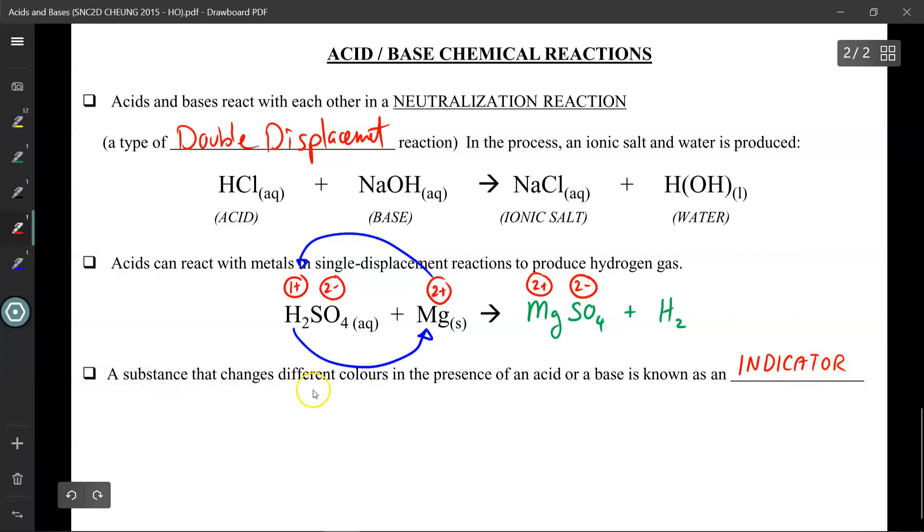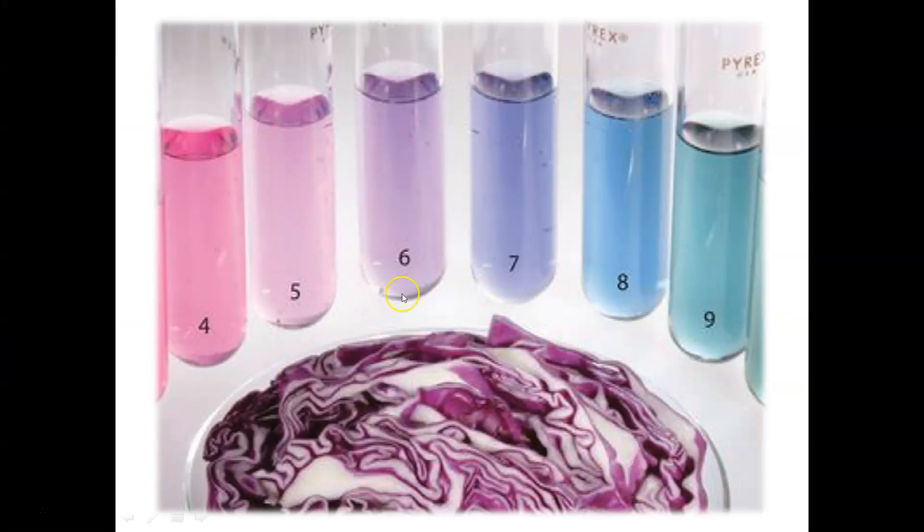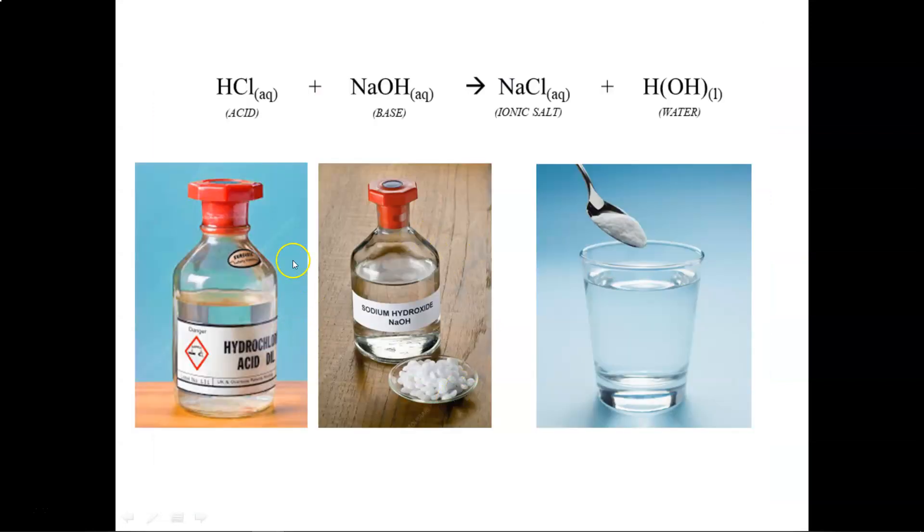Instead we can use something called an indicator. This is a chemical substance that changes different colors in the presence of an acid or a base. There are many different types of indicators, but a cool one you can make at home is found in red cabbage. There is a chemical inside red cabbages called anthocyanin that changes color depending on how many hydrogen or hydroxide ions are floating around your solution. The anthocyanin turns more bluish greenish if exposed to hydroxide ions, but becomes more pinkish reddish if exposed to hydrogen ions. We refer to this as an indicator because it indicates if it's an acidic or basic solution, because it would be hard to distinguish between an acid and a base without it.